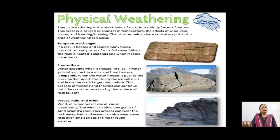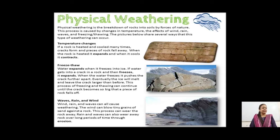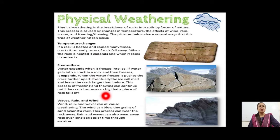Physical weathering happens due to various agents. It has some specific agents like temperature changes, freeze-thaw action, wind, waves, and rain.